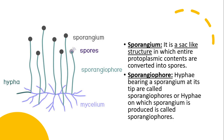The sporangiophore is a specialized hyphae that bears the sporangium at its tip — in other words, the hyphae on which the sporangium is produced is called the sporangiophore. The sporangium is a sac-like structure in which the entire protoplasmic material is converted into spores. These are some key structural features of fungi.